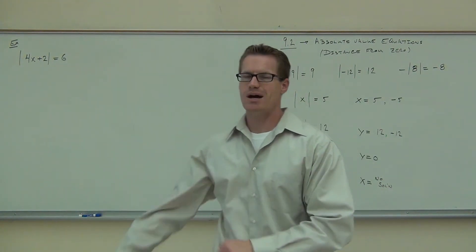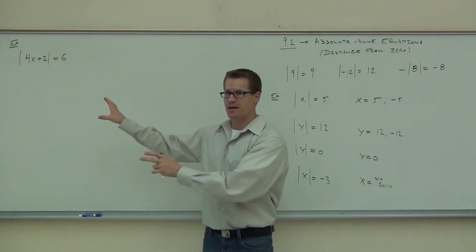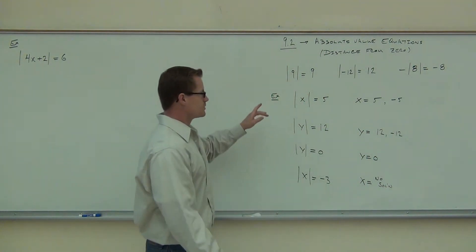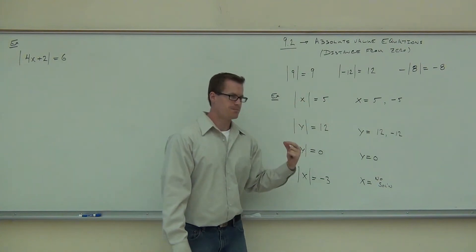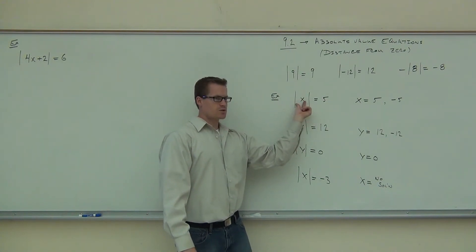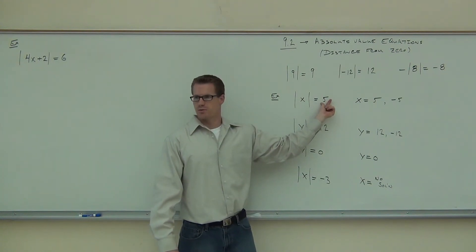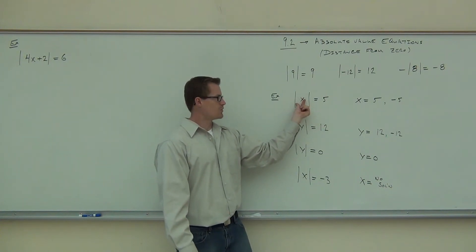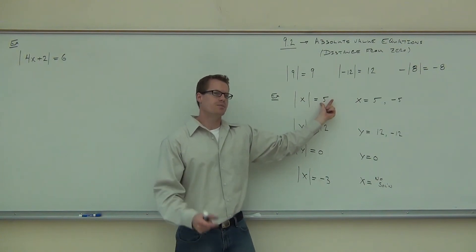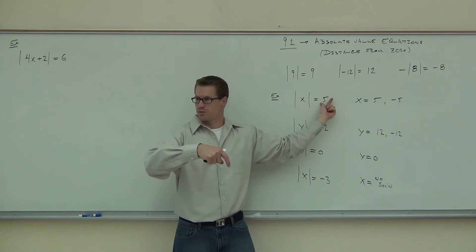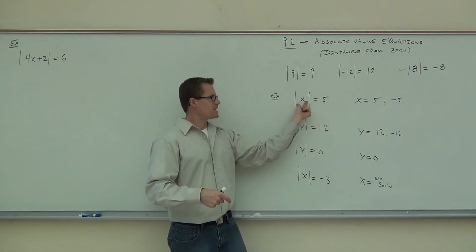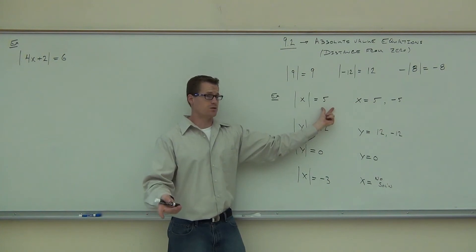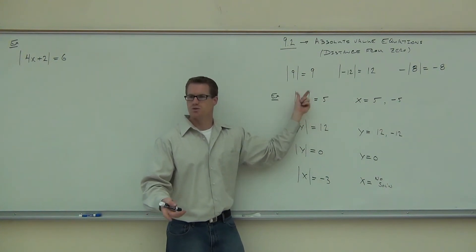The absolute value of 4x plus 2 equals 6. We already learned that this probably has two solutions. But how do we figure them out? If the inside of this equals 6, absolute value is not going to change that. However, if the inside equals negative 6, it wouldn't matter because the absolute value will make it positive and it would still equal 6. So I'll say it one more time: if the inside equals this number, you're good. If the inside equals the negative of this number, you're also good because absolute value changes that negative into the positive.